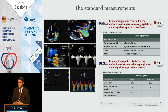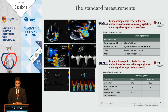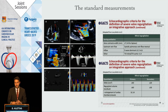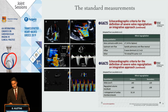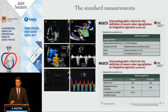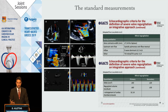The standard measurements suggested by the European Society of Cardiology are the vena contracta, the PISA radius, the derived ERO, the density of the Doppler of the mitral leak, the systolic wave of the pulmonary veins, and a color M-mode which gives additional information about the duration of the mitral valve regurgitation.